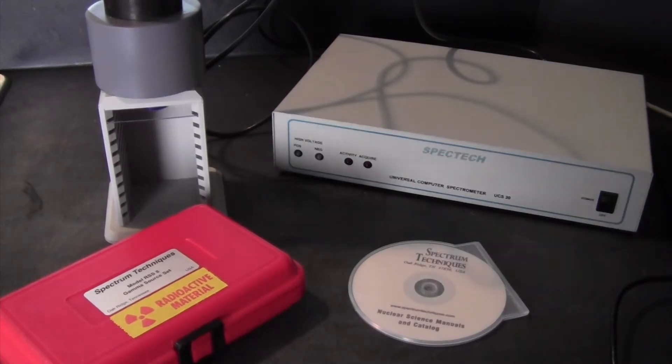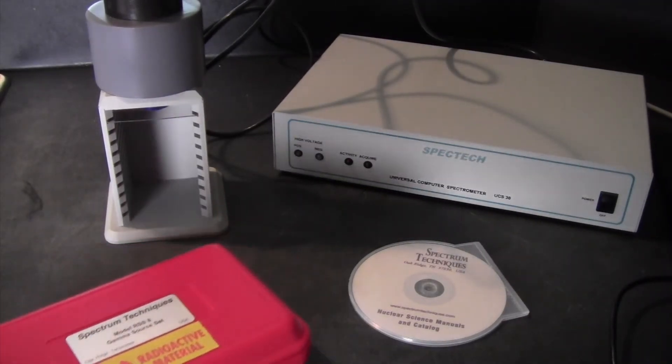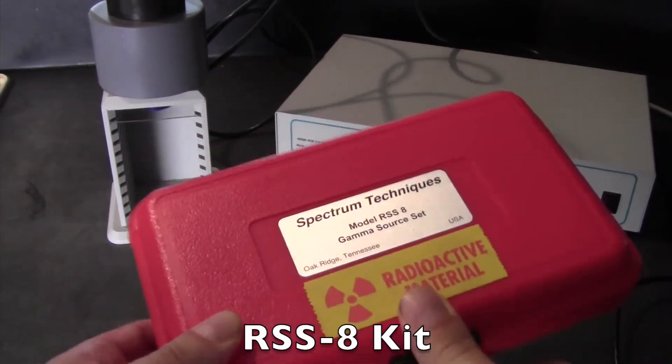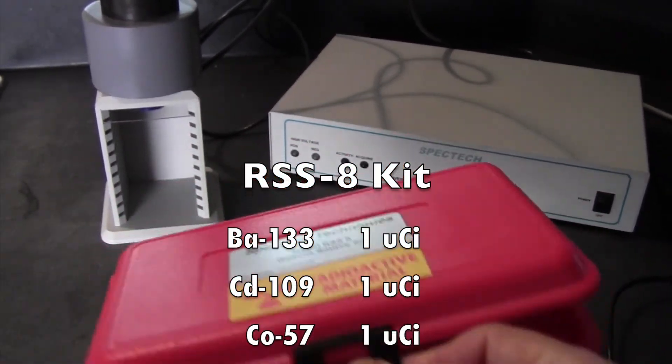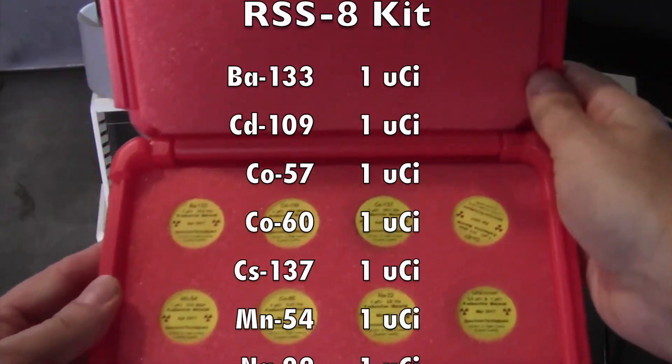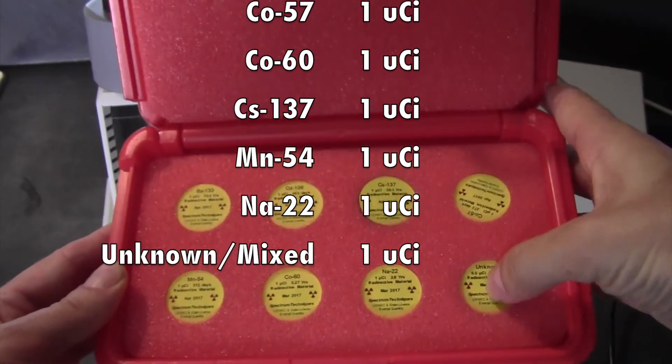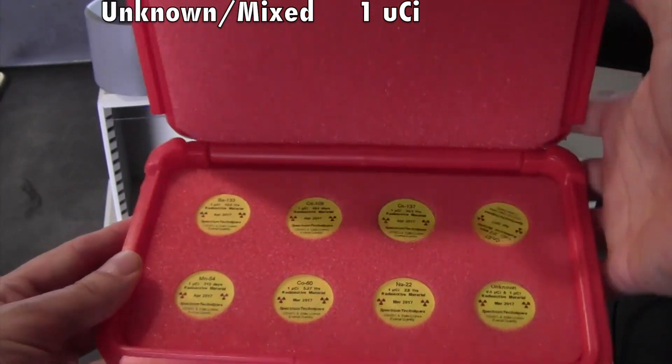It also includes an RSS-8 disk source kit, and we have eight sources here of varying isotopes and a mixed source of unknown isotopes.